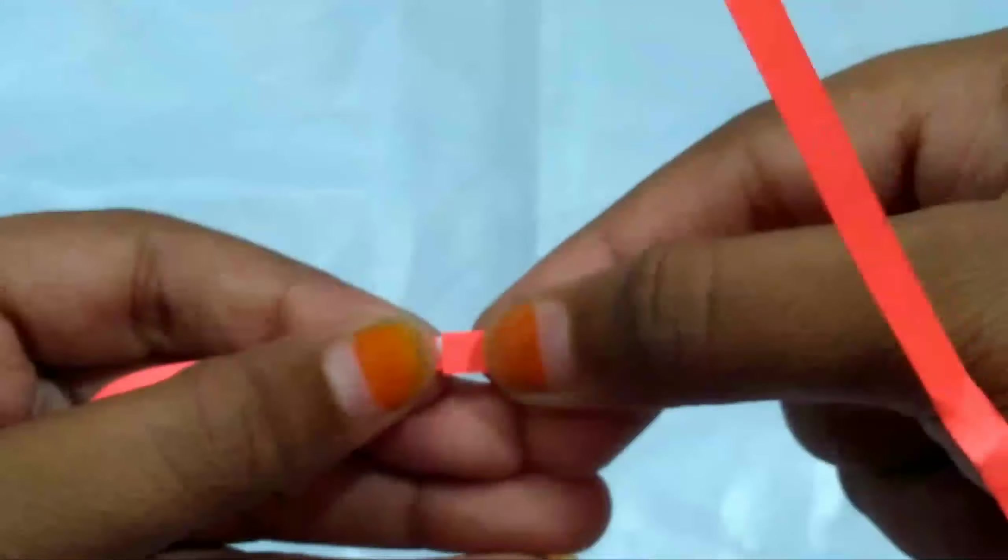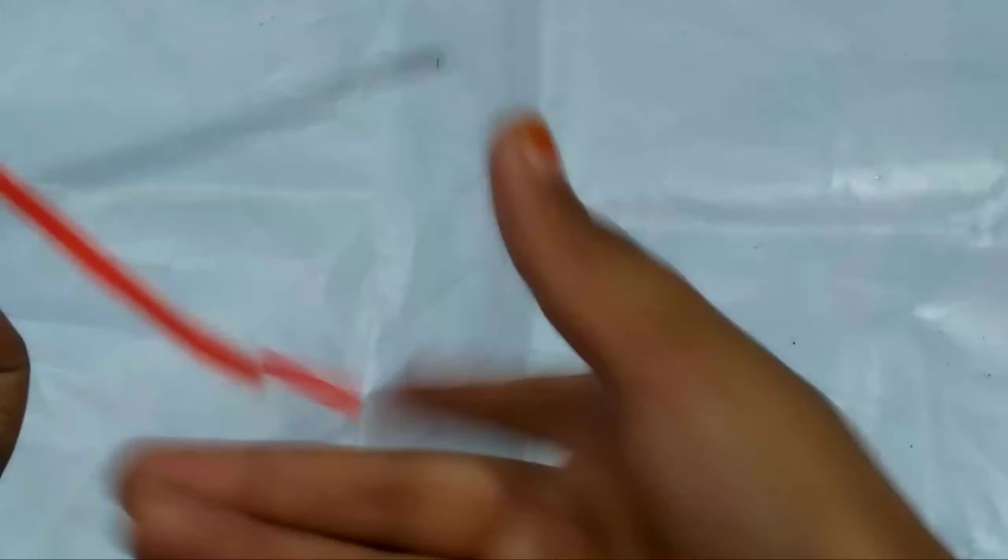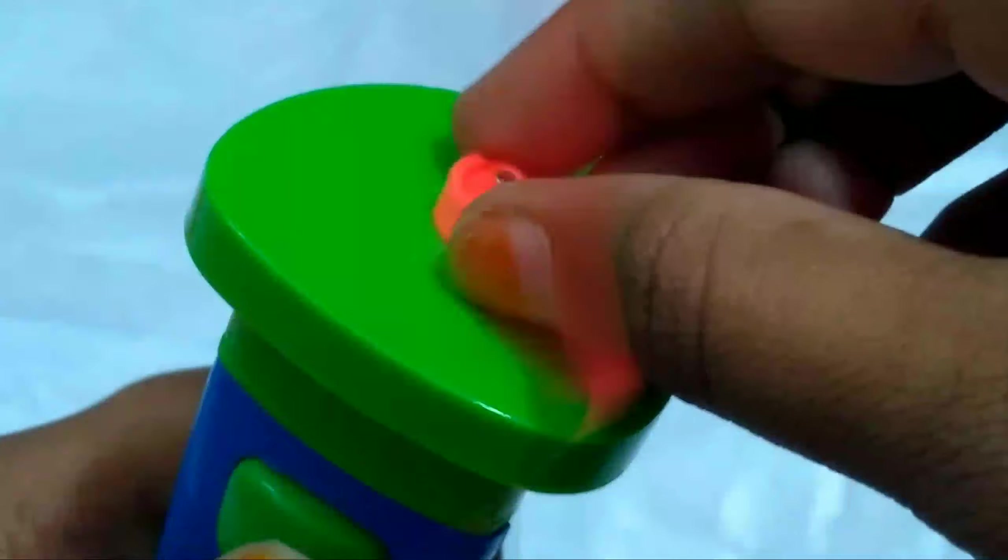Now take two strands, apply glue and attach it, and fill it with the super quiller. Now apply glue and attach it.